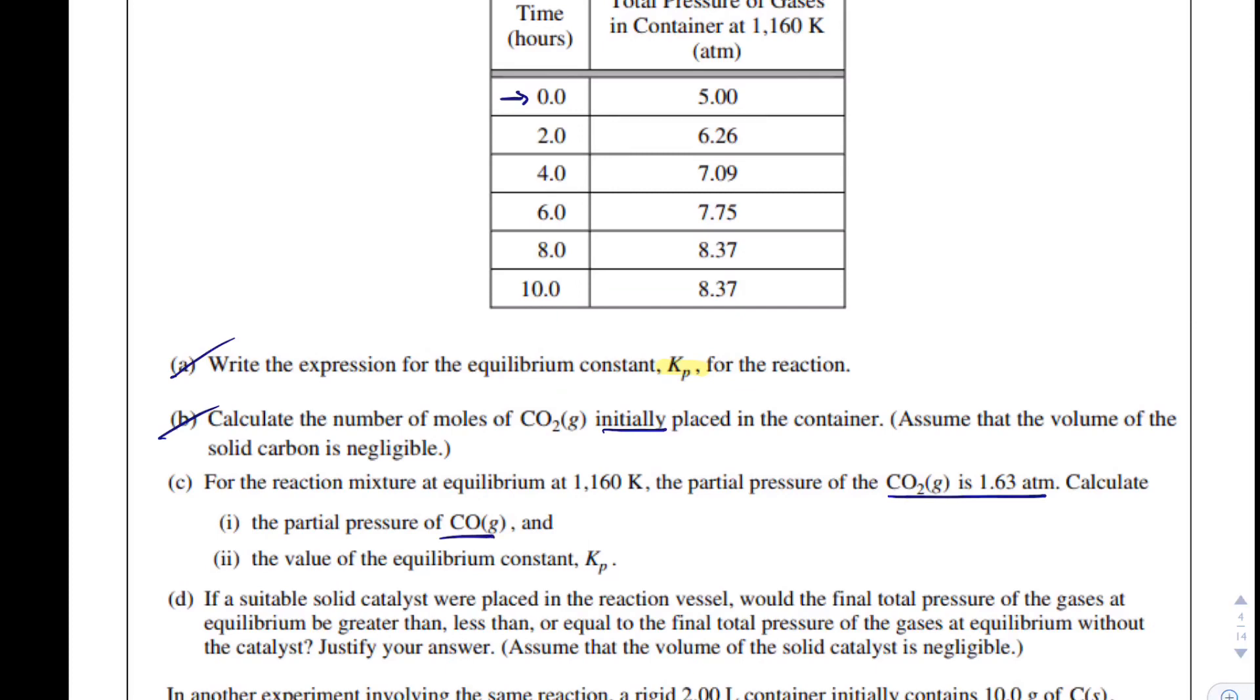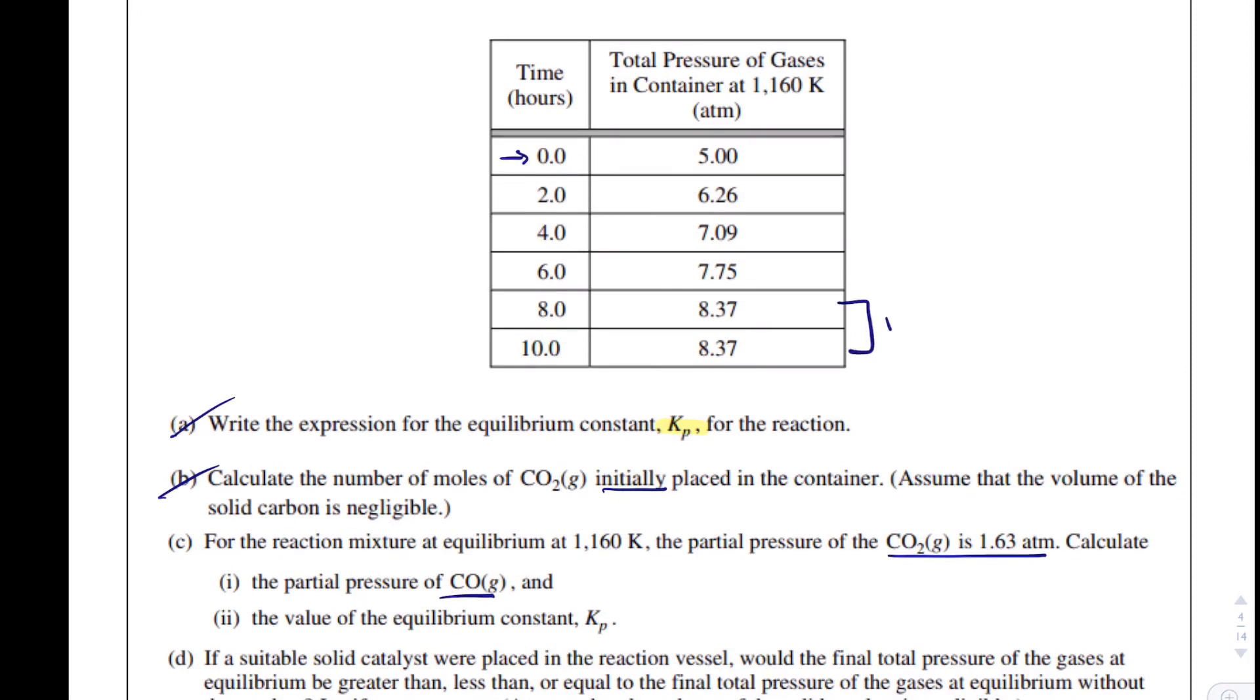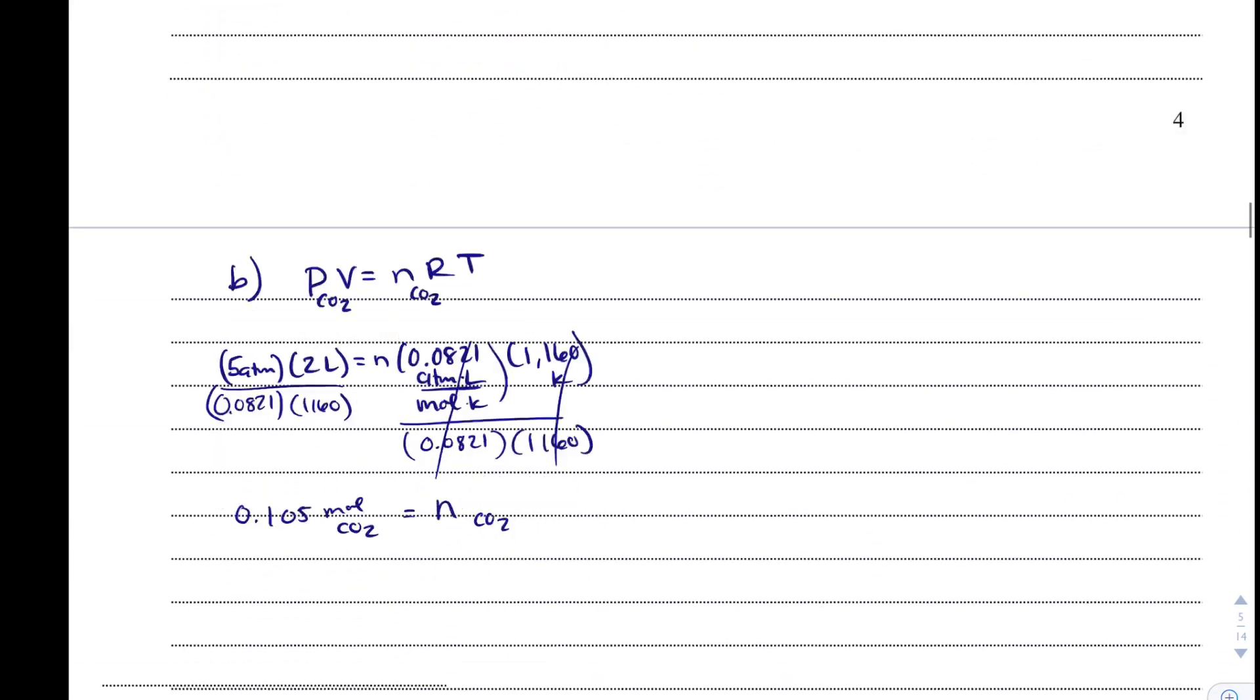So what I notice is that we must have reached equilibrium because there is no observable change. And we know that when we reach equilibrium, the reaction doesn't actually stop, but the forward and reverse reactions are occurring at the same rate, so there is no observable change. So the total pressure is 8.37 atmospheres.